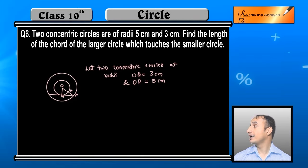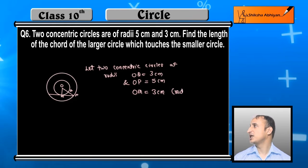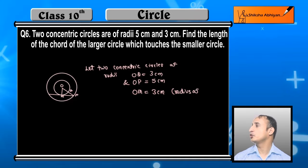Now students, if you see, the chord of the larger circle is acting as a tangent to the smaller circle. So OM will be 3 centimeter because OM and OQ are both radii of the smaller circle.